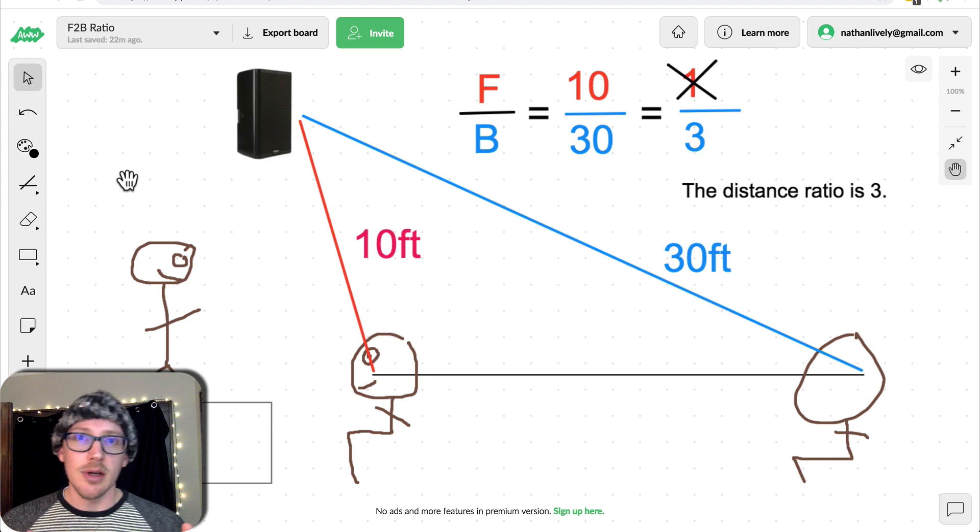All of these terms are essentially a quick way to compare one distance to another. And those two distances are usually the speaker to the first distance and the speaker to the second distance. Most often, especially when we're talking about a single speaker in a single audience plane, that's the speaker to the first row and the speaker to the last row.